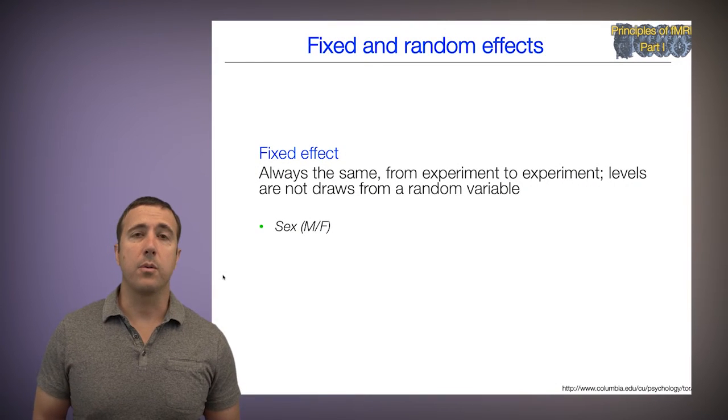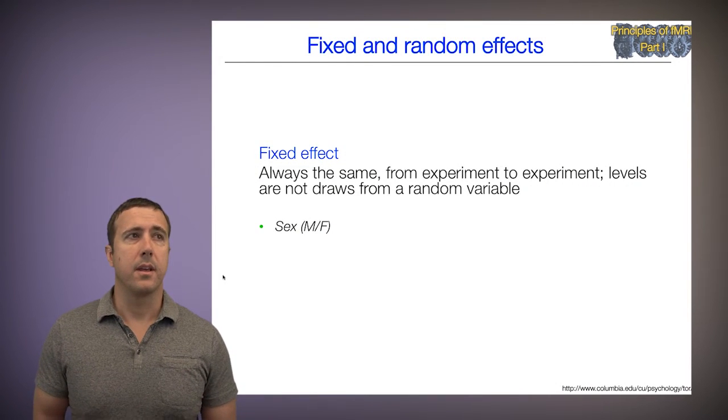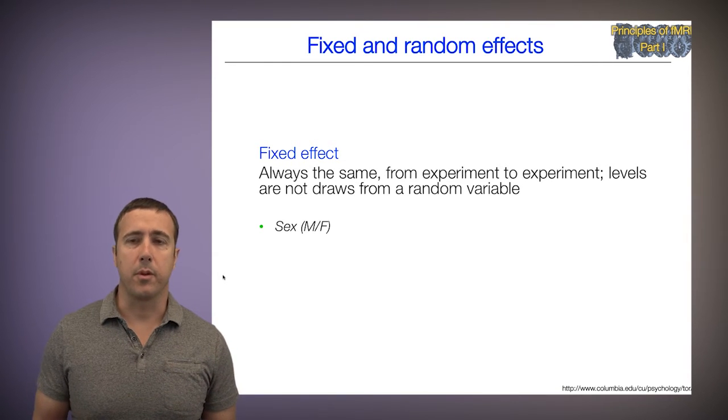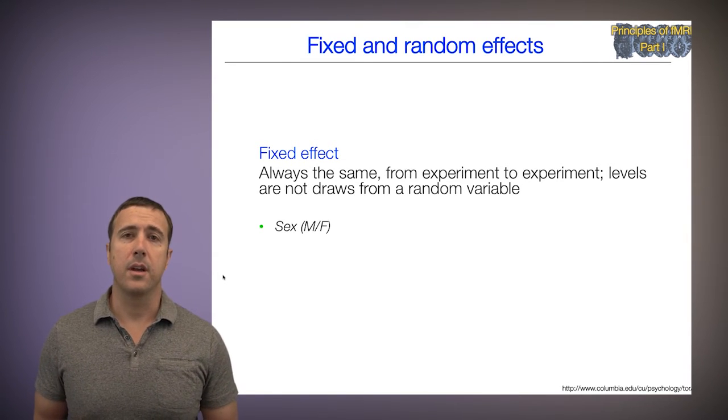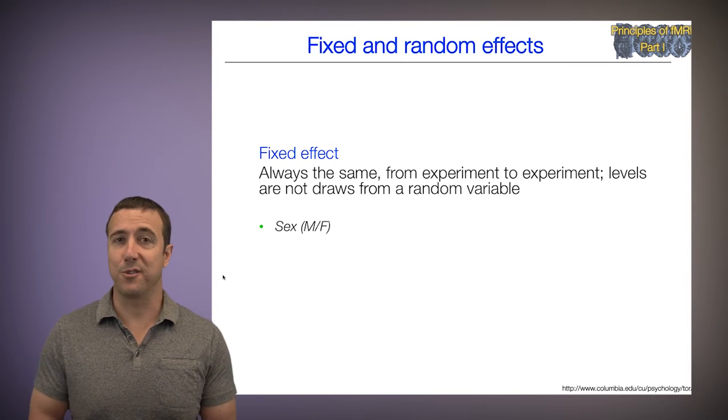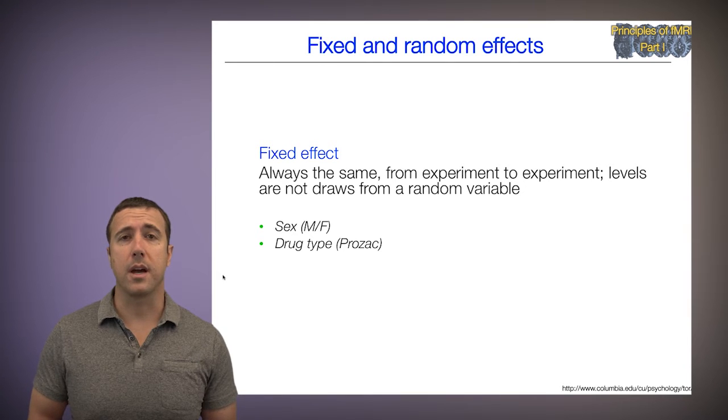So let's look more deeply at fixed effects and random effects. So a fixed effect is always the same, from experiment to experiment. And levels are not drawn from a random variable. They're not assumed to be drawn from a random variable. So some examples are sex, male or female. There's only two, usually, alternatives.